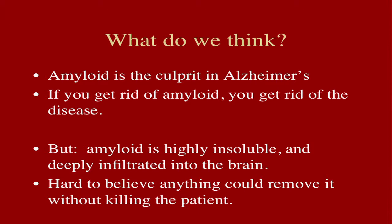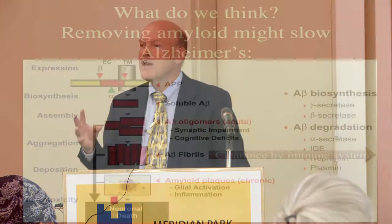The idea — and again, this is an opinion — is that amyloid is the culprit in the disease, and if we could do something about amyloid, we could fundamentally change the course of the disease. Now, amyloid once it's in the plaques is really densely aggregated. In a test tube, we have to use concentrated acid to even get it into solution so we can measure it. It's really tough stuff, and it's really hard to believe that anything would help get the amyloid out of the brain.